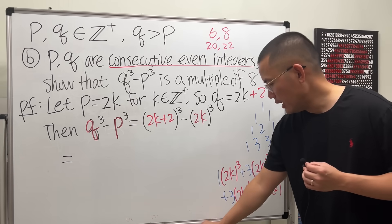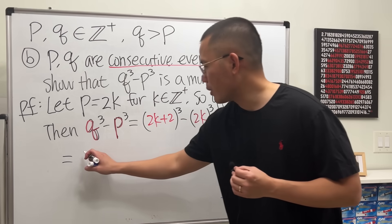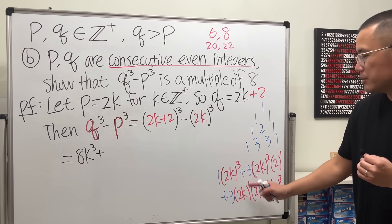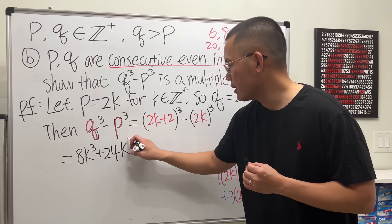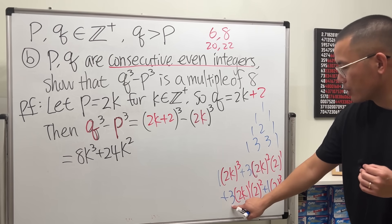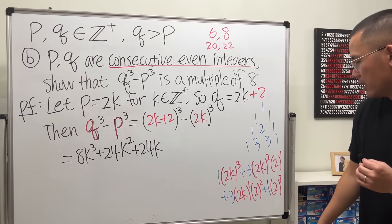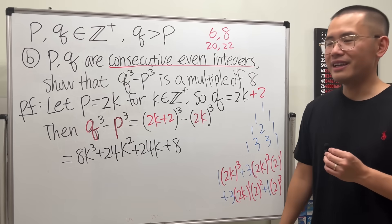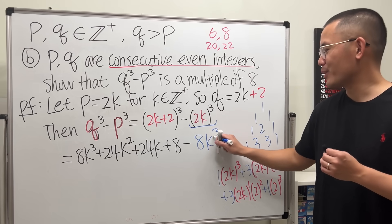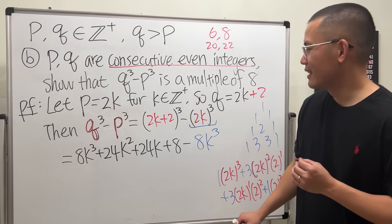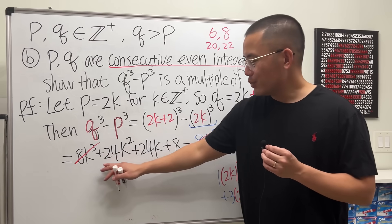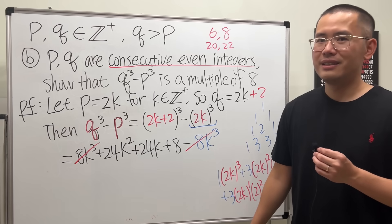Working this out: we get 8k³ + 24k² + 24k + 8, and then subtract (2k)³ which is 8k³. The 8k³ terms cancel nicely, leaving 24k² + 24k + 8. Notice that 24, 24, and 8 all have a factor of 8.